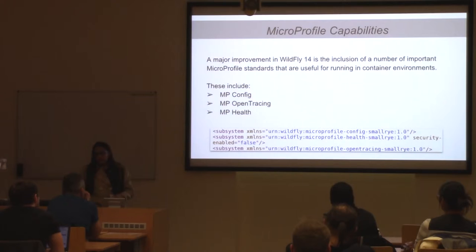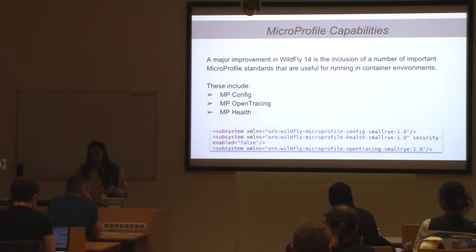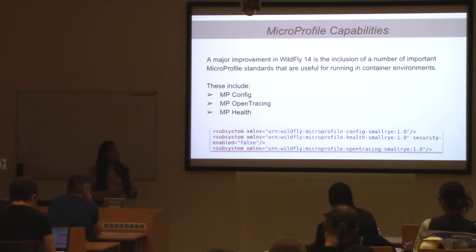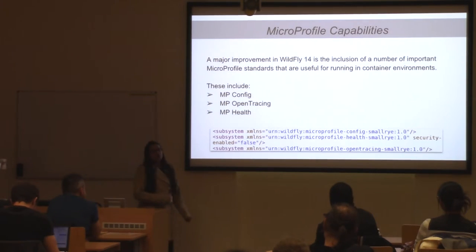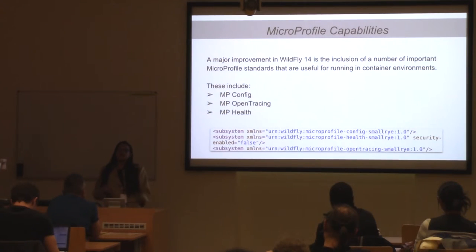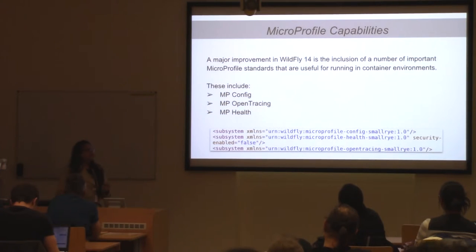mpOpenTracing specifies how incoming and outgoing requests will have OpenTracing spans automatically created. OpenTracing is a set of implementation APIs, libraries, etc. And mpHealth checks the health of the computing node — if the computing node is not working, is terminated, or shut down, it gets replaced with a different computing node.